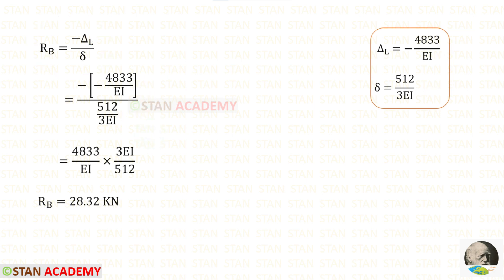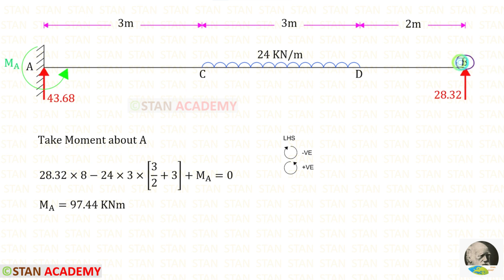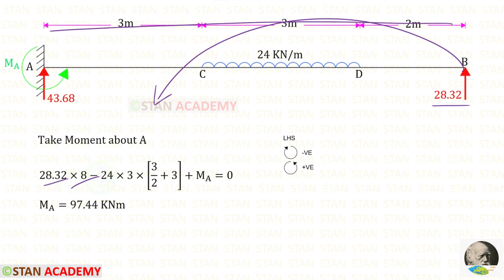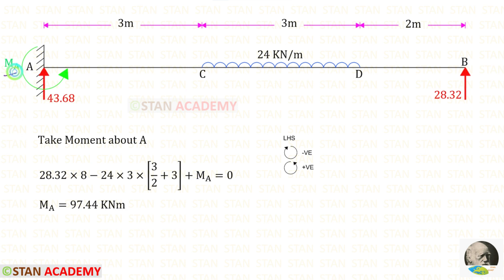We have now found delta_L and delta. Applying both values, we can find RB = 28.32 kN. Now let us apply sigma V = 0 to find RA. Taking moments about point A, RB acts anticlockwise (positive) with distance 8, and the UDL of 24 acts clockwise (negative) over distance 3. Assuming MA acts anticlockwise, we get a positive value, confirming MA acts in the anticlockwise direction.